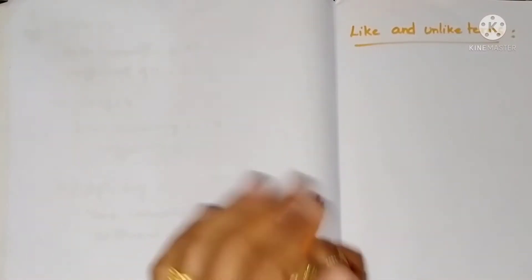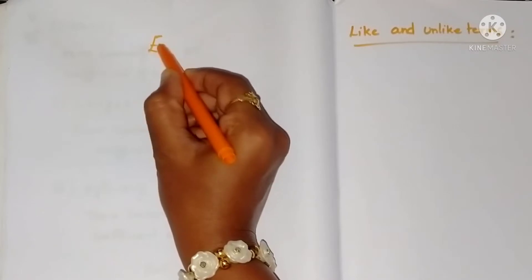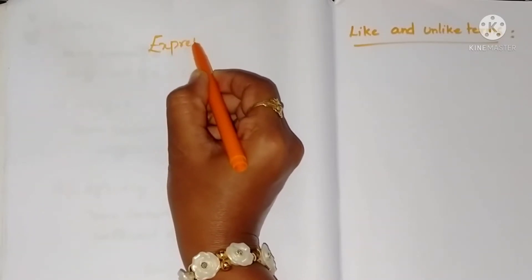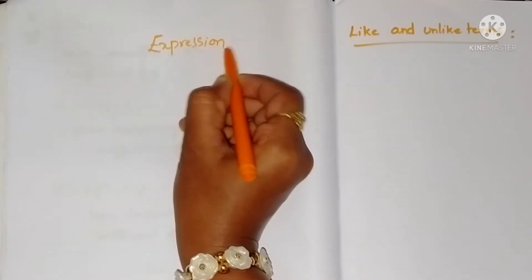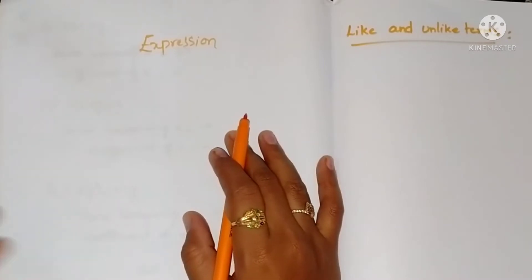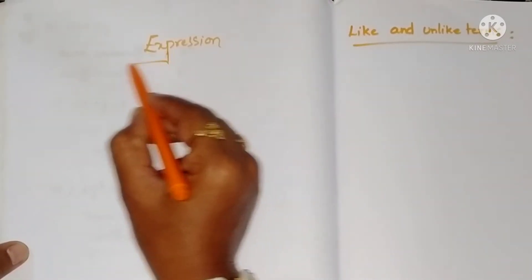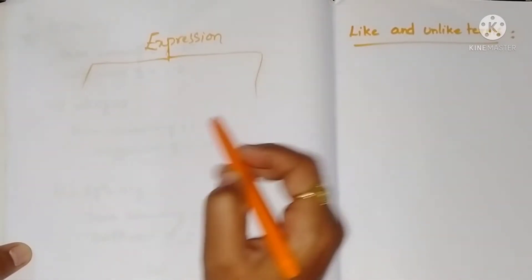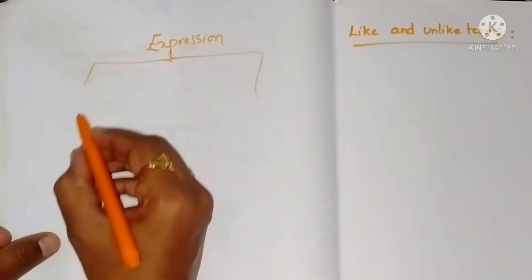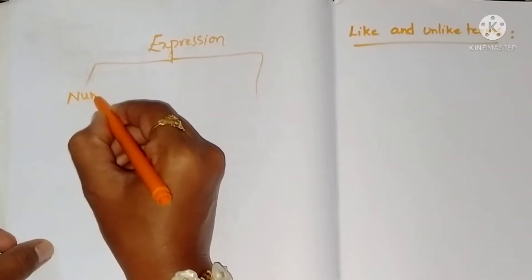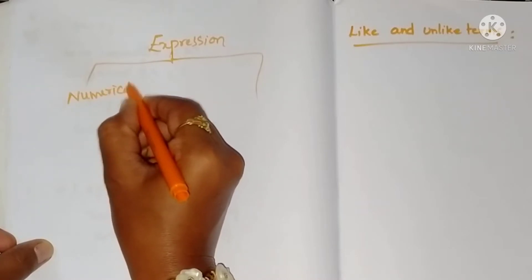Hello students, welcome to my channel. Today in this video we are going to see like and unlike terms and exercise 9.2 problems. We know what an expression is: a constant or a variable or combination of constants or variables. If an expression contains only numbers, then that is a numerical expression.